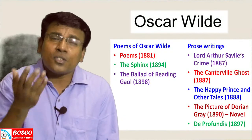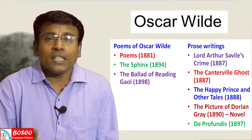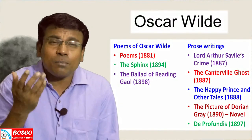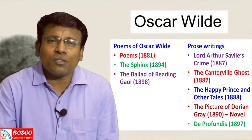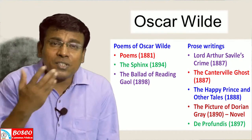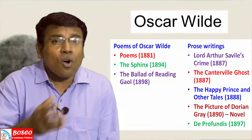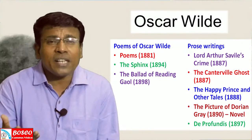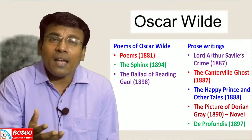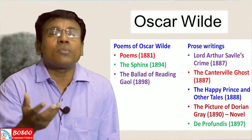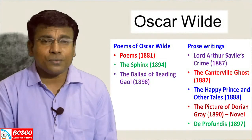His prose consisted of stories as well as one novel, and they were typical products of Aestheticism. The prose writings of Oscar Wilde were ingenious, very clever, witty, polished, and ornamental in style. They were mainly intellectual and lacked any human warmth.